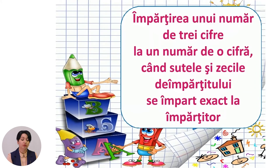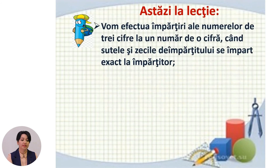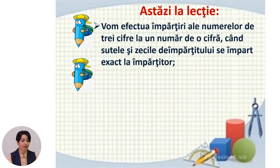Deci, subiectul orei de astăzi este împărțirea unui număr de 3 cifre la un număr de o cifră, când sutele și zecile împărțitului se împart exact la împărțitor. La lecție, vom efectua împărțirea numerelor de 3 cifre la un număr de o cifră când sutele și zecile împărțitului se împart exact la împărțitor.